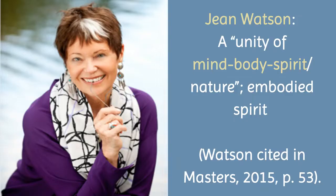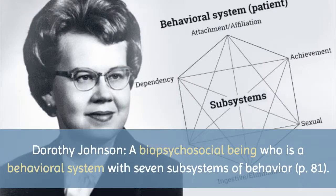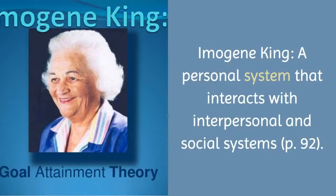Dorothy Johnson defined person as a biopsychosocial being who is a behavioral system with seven subsystems of behavior. So you have a biopsychosocial being who is a behavioral system, and she defined the seven subsystems of behavior that the nurse should assess. Imogene King defined person as a personal system that interacts with interpersonal and social systems. She used a systems theory approach, describing the person as a personal system who interacts with other systems interpersonally and through social systems.